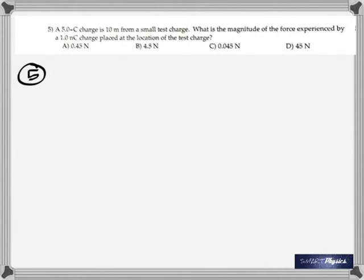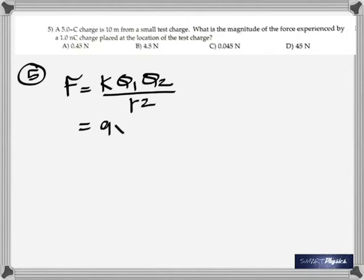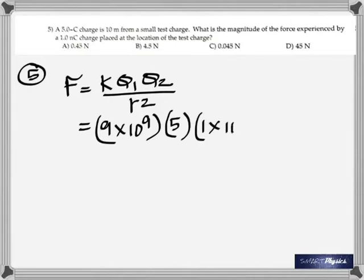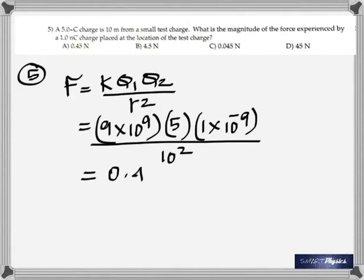Question five: a 5 coulomb charge is 10 meters from a small test charge. What is the magnitude of the force experienced by a 1 nano coulomb charge placed at the location of the test charge? This is a direct application of Coulomb's law: F = k·q₁·q₂ / r². With k = 9 × 10⁹, q₁ = 5 C, q₂ = 1 nano coulomb, and r = 10 m, you get F = 0.45 newton.